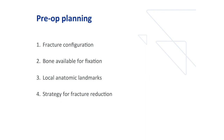The basic concepts in preoperative planning involve first understanding the fracture configuration, then seeking the uninvolved bone available for distal fixation, identifying local anatomic landmarks within the distal fracture fragment to assist in positioning of the reamer and the stem in order to reproduce the preoperative leg length and soft tissue tension, and finally the strategy for fracture reduction around that newly formed internal strut.